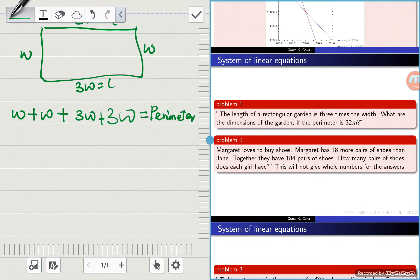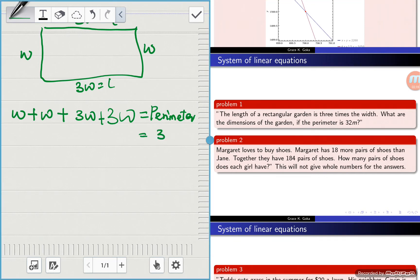And from the question, it says the perimeter is 32 meters, so this whole thing is equal to 32.